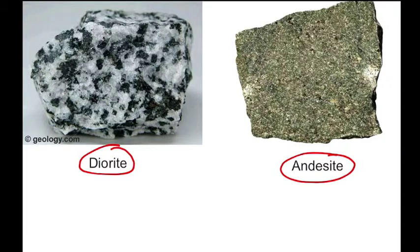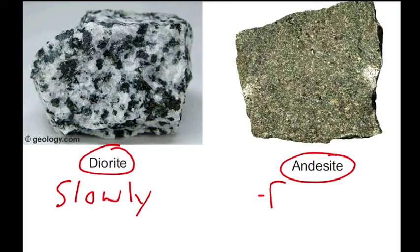You can typically tell which one cooled slowly by the one that has larger crystal grains. The diorite cooled very slowly, and the andesite probably erupted as lava and cooled very fast. So depending on the rate of cooling — if it cools in the earth very slowly, it's an intrusive igneous rock; versus very fast cooling is going to be an extrusive igneous rock.